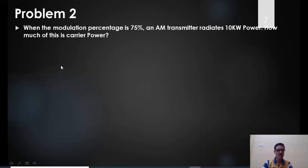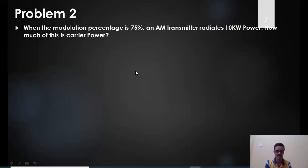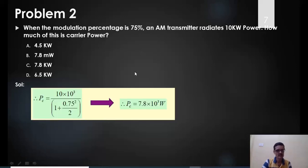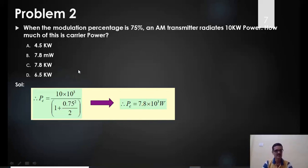Problem 2: When the modulation percentage is 75%, an AM transmitter radiates 10 kilowatts total power. How much of this is the carrier power? Using PC = PT / (1 + μ²/2): PC = 10 kW / (1 + (0.75)²/2) = 10 kW / (1 + 0.28125) ≈ 7.8 kilowatts. The answer is 7.8 kW.